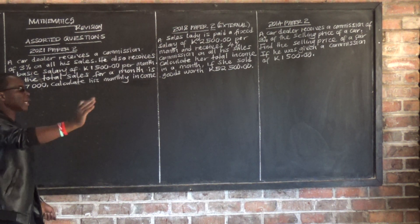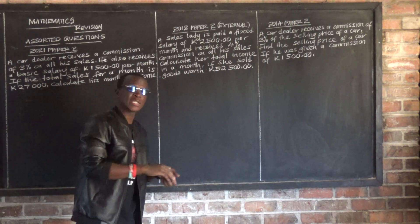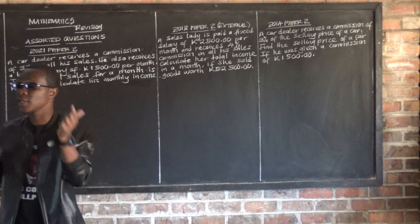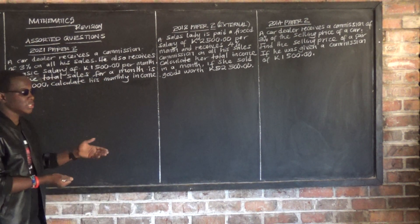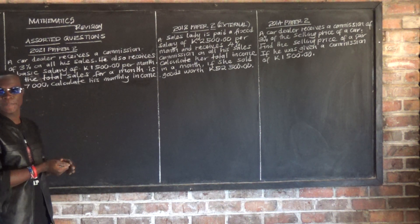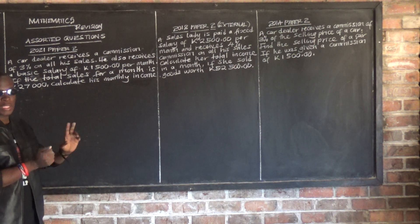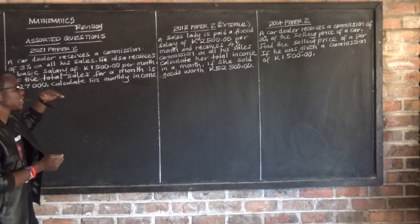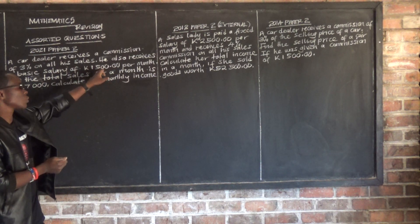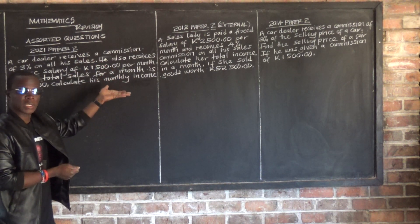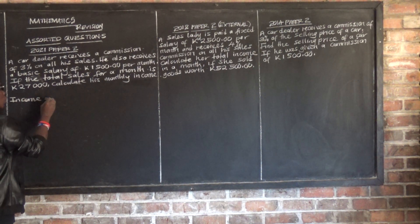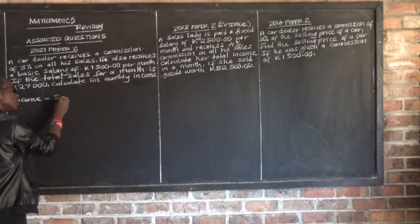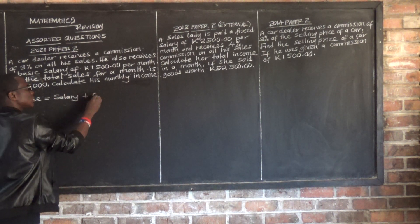Income is simply the money received, while expenditure is the money spent. There are two things involved: his fixed salary of $1,500, and his commission. So total income is equal to salary plus commission.